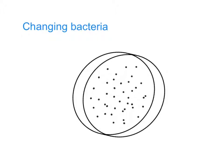Every so often something goes wrong in the way that the bacterium reproduces, and you get something called a mutation. There it is — the red one there.